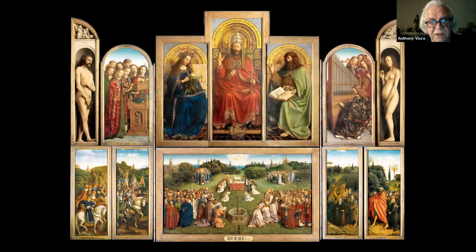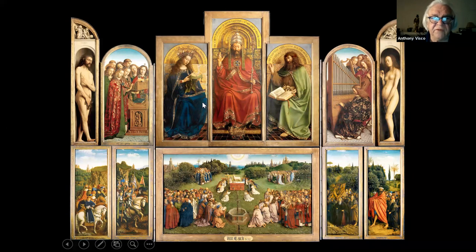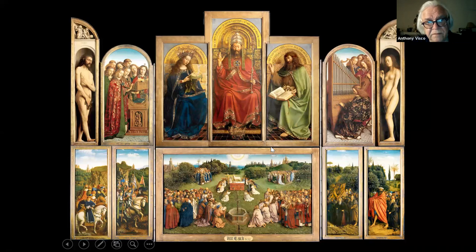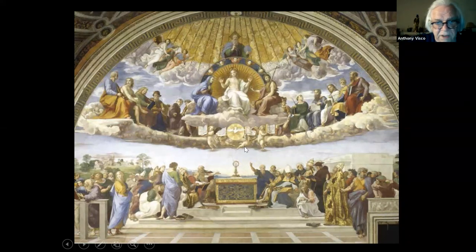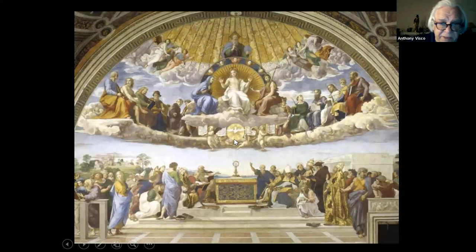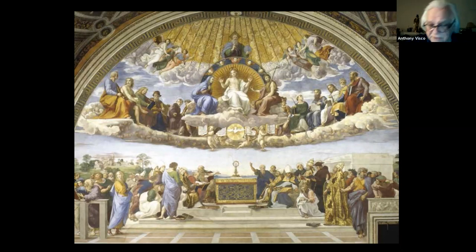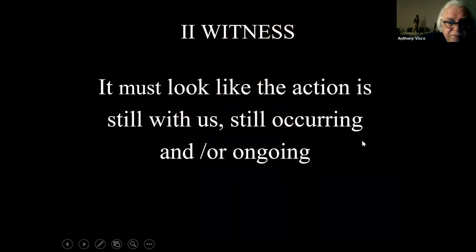The great Ghent altarpiece — even though there are so many different scales of figures, the central triptych of Christ the King, the angels, Adam and Eve — it still doesn't alienate us. And Il Disputo by Raphael, very inclusive, drawing us right to the center. The use of center in sacred art is very important — it tells us what is central. That became taboo in modernism; anybody who went to art school in the 60s or 70s was told, 'Never put anything in the middle.' But there's a reason it means something.